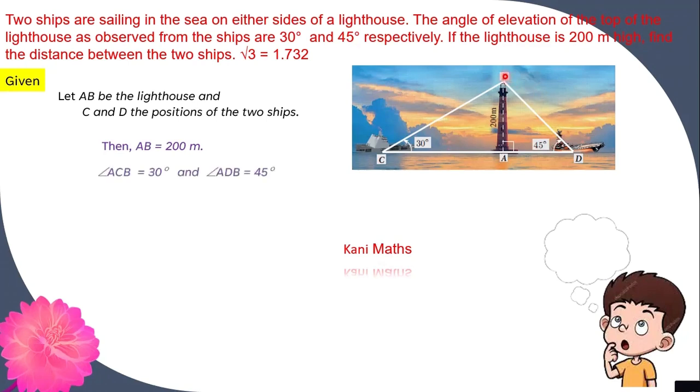Lighthouse height. Angle CAB is 30 degrees. The other angle is 45 degrees. Angle DAB is 45 degrees. Then there are two right angle triangles.